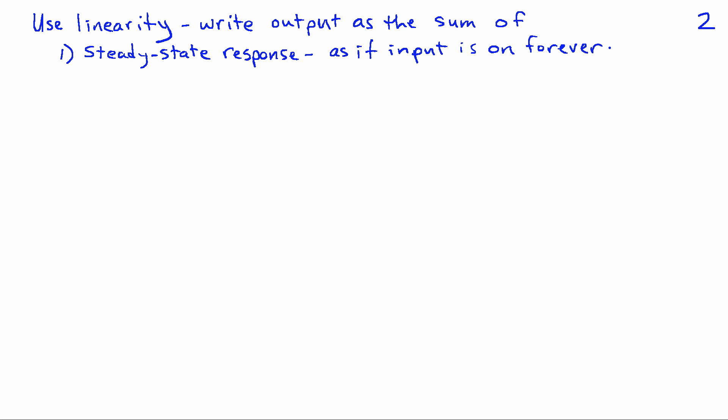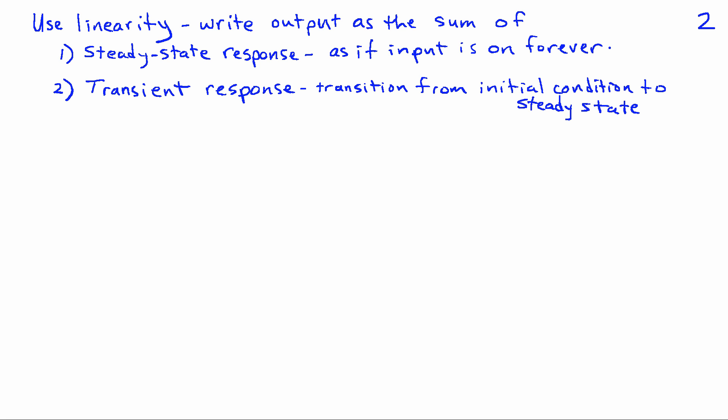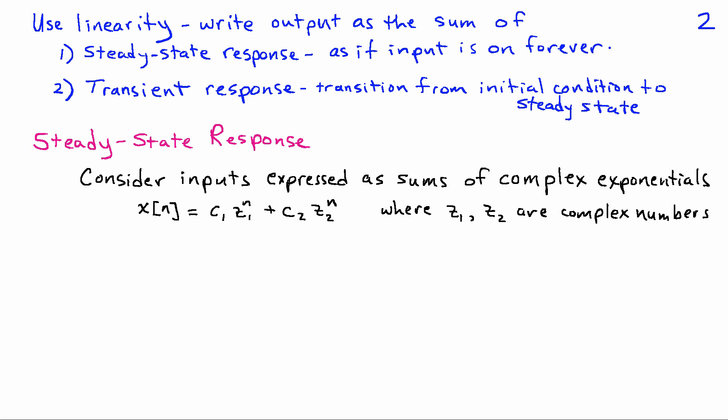First, we're going to look at a steady-state response — that is, how the system behaves if the input has been on forever, so in effect there's no stored energy. Then we're going to add in a transient response, which is a term that tells us how the system transitions from its initial condition to the steady-state condition. So let's start with the steady-state response.